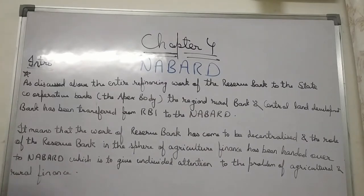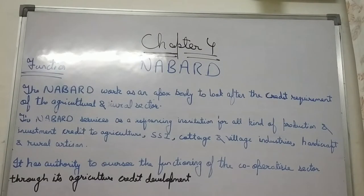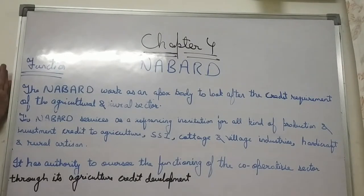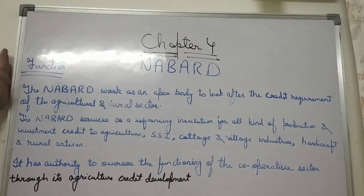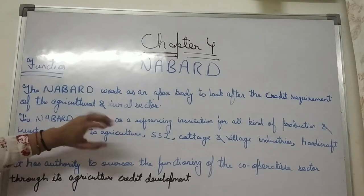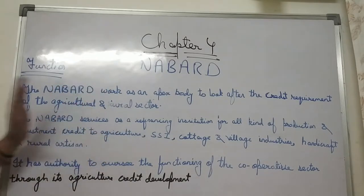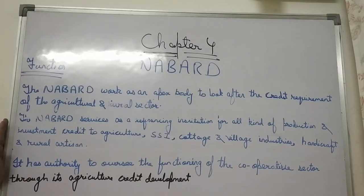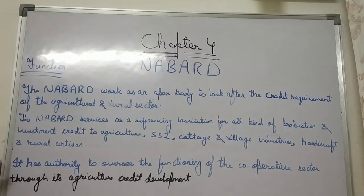The introduction of NABARD is now complete. Moving to the functions of NABARD: NABARD works as an apex body to look after the credit requirements of agriculture and the rural sector. It also serves as a refinancing institution for all kinds of production, investment credit to agriculture, SSI, cottage industries, village industries, handicrafts, and rural development.